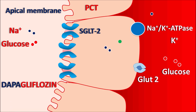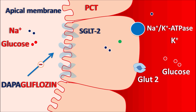Drugs like Dapagliflozin inhibit SGLT2 receptors, thereby inhibiting the reabsorption of glucose. Gliflozins are glucose flow inhibitors — they inhibit the reabsorption of glucose into the systemic circulation.